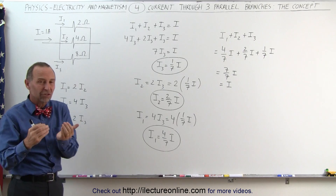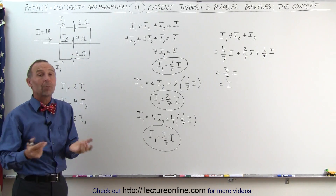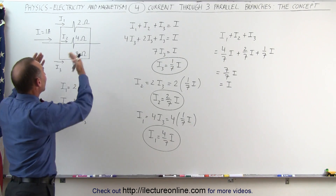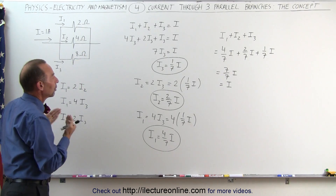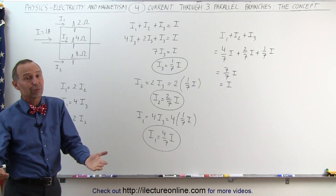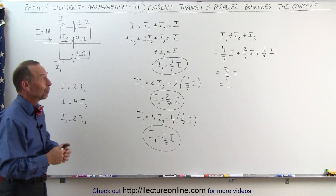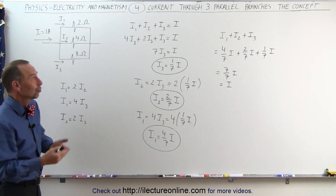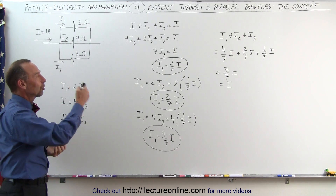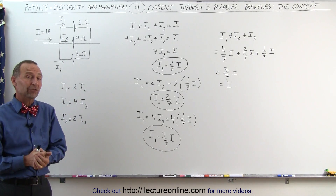This was conceptual with three very specific resistors. What we need to do next is look at the general case with any size resistors — can we come up with equations that describe the current through each branch? The answer is yes. In our next video, we'll show how to derive the general case to calculate current through each of three parallel branches.